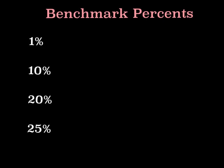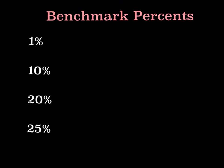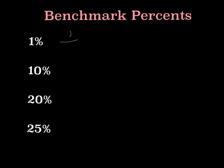Let's start by looking at benchmark percents. These are the percents that will help us be able to get to other percents that may not be as easy to find using a bar model. So if we look at 1%, we should think that there are a hundred one percent in a hundred percent. This means that 1% is one one hundredth of a hundred percent.